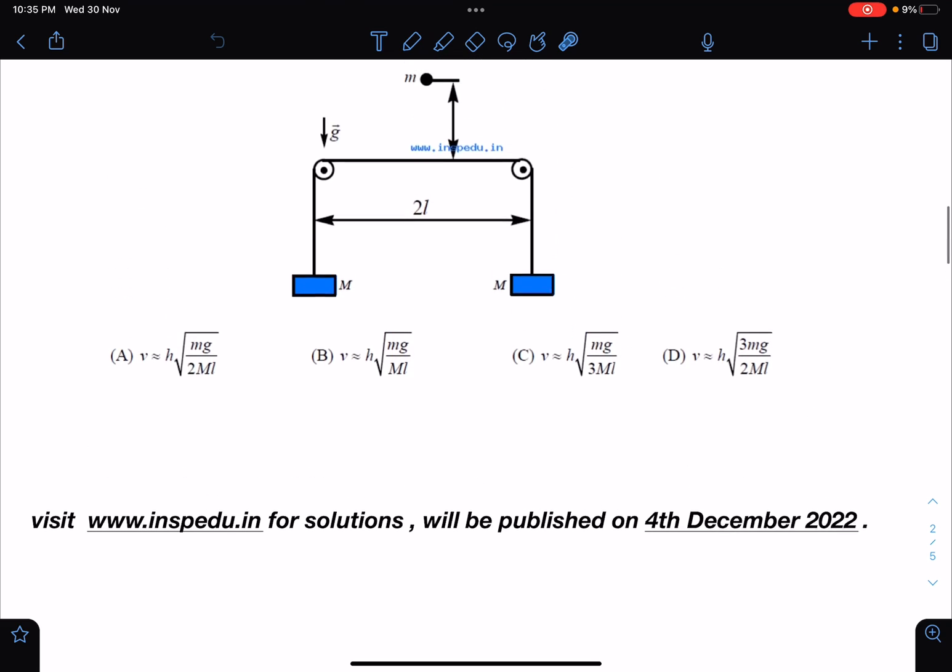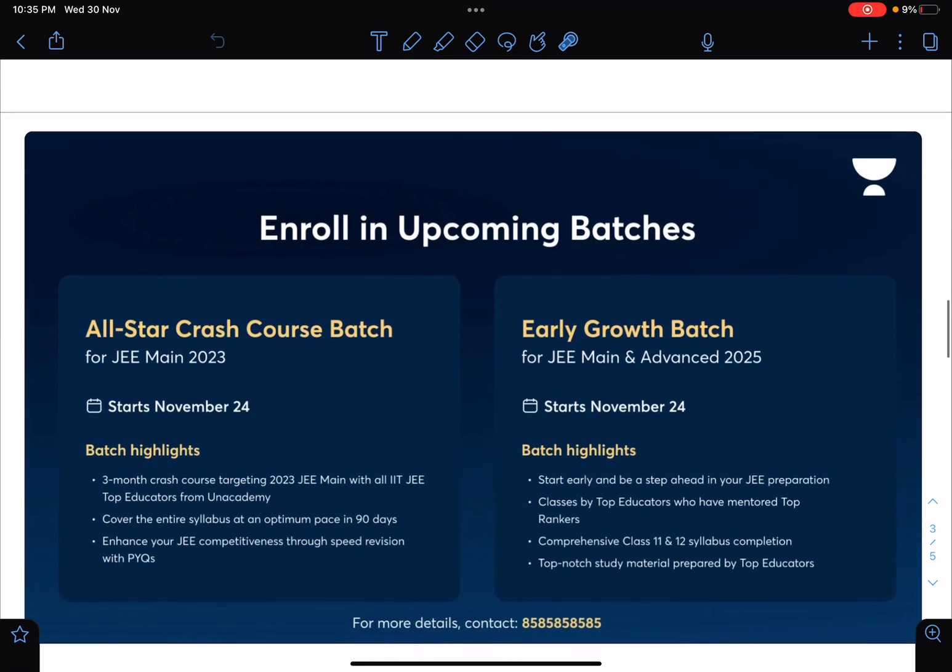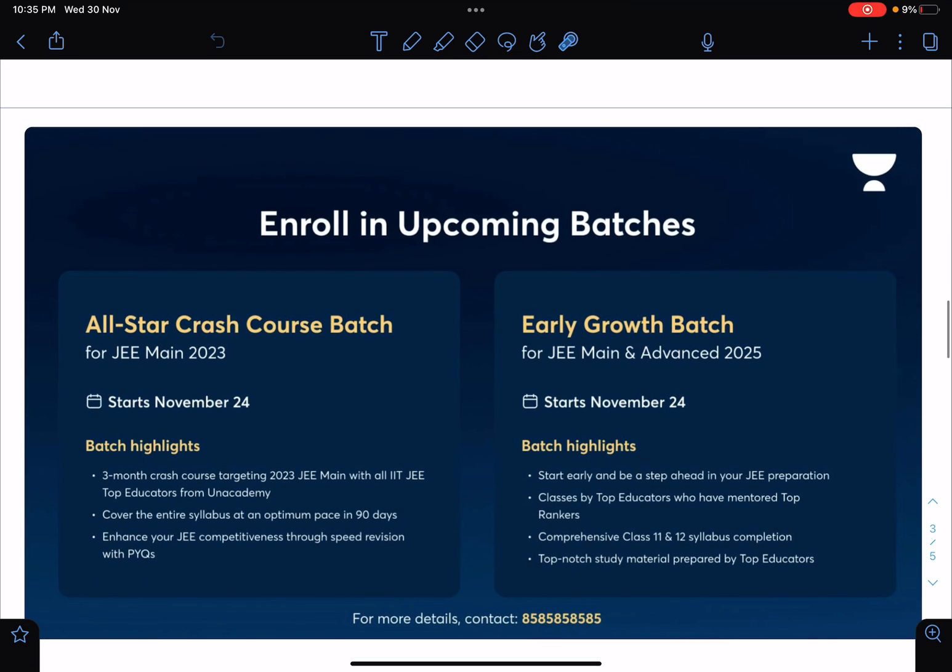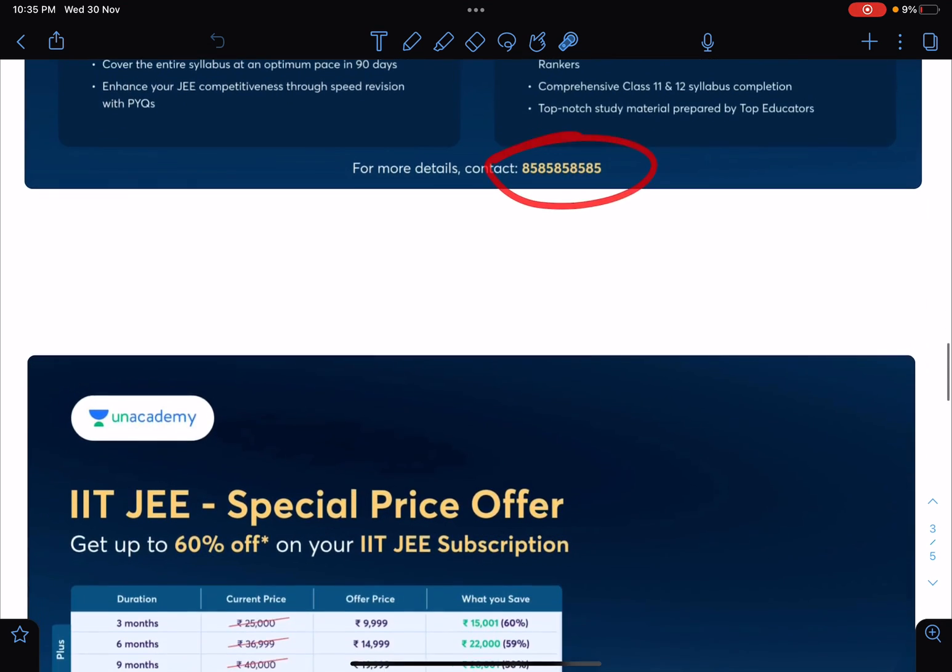I'll be making videos of some of the problems as well. And here it's about this Unacademy crash courses and early growth batch for 2025. These batches will start from, they have already started actually from November 24th. This is all-star crash course batch, it is for three months and all the top educators of Unacademy will be part of this. For more details you can contact on this number.